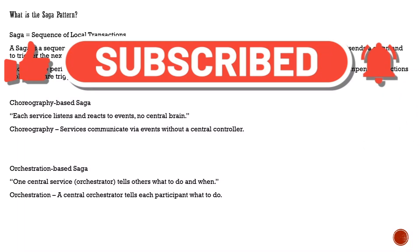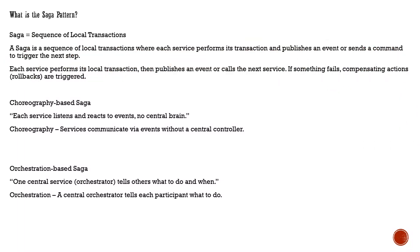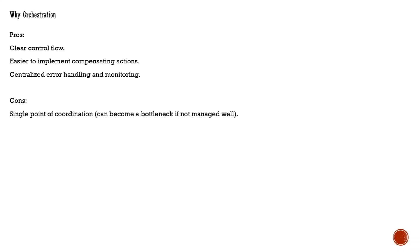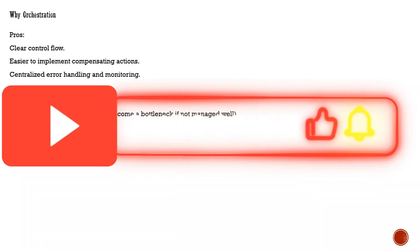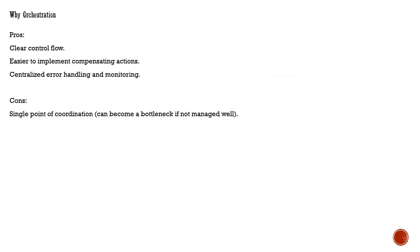Orchestration is the opposite of choreography. There is one central service called an orchestrator, which tells what to do and when to do it. It controls other transactions, whether a service has failed or succeeded, and based on that it rolls back or executes the next set of instructions. The benefits include clear control of flow, easier error handling, and centralized monitoring. The downside is a single point of coordination, which can become a bottleneck if not properly managed.